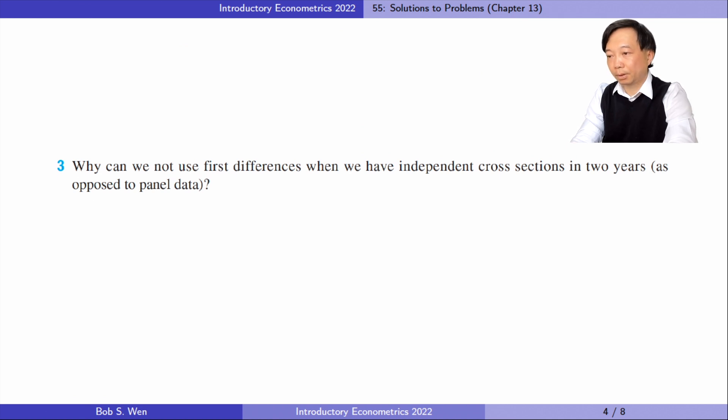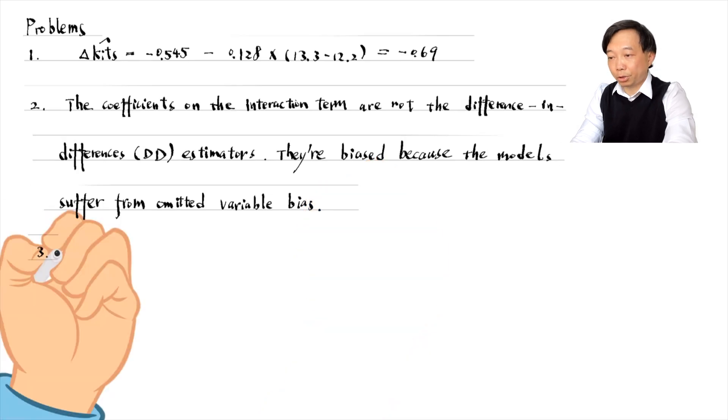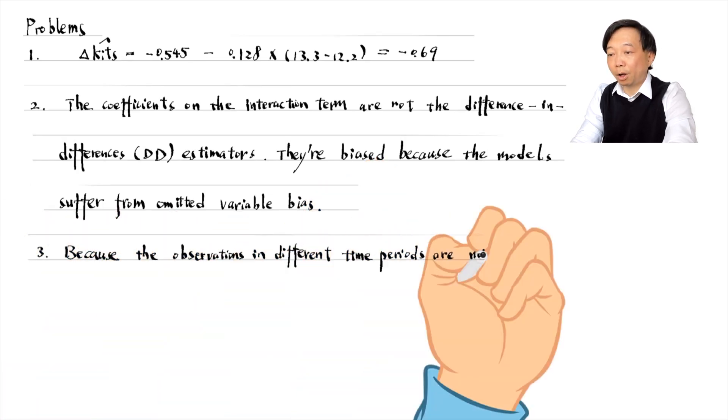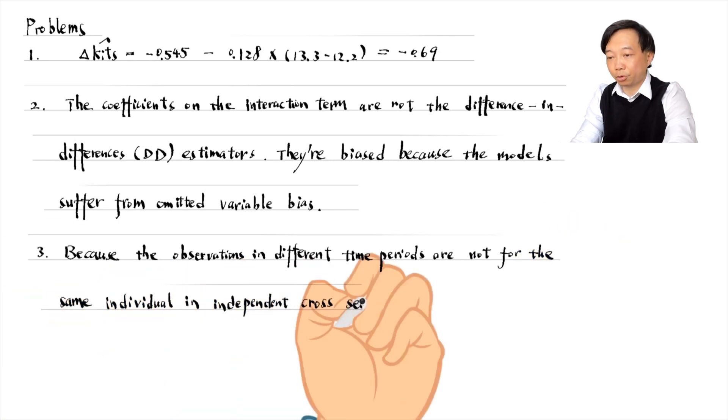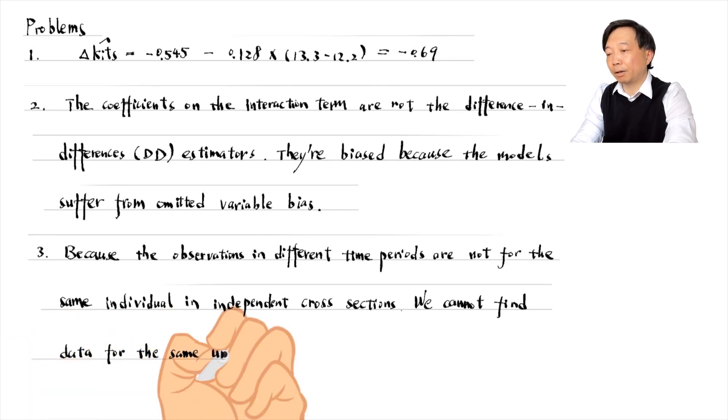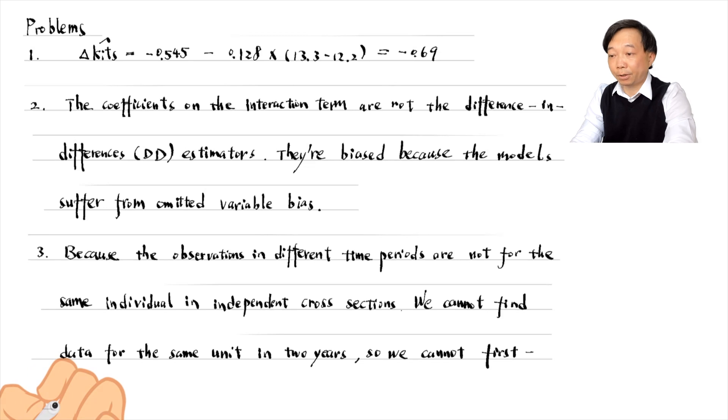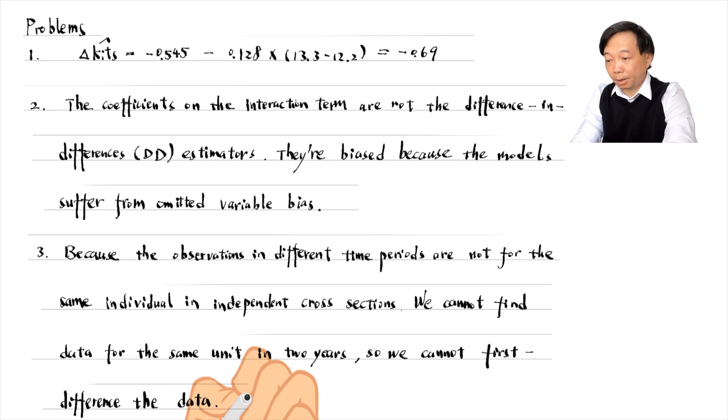Let's solve problem 3. Why can we not use first differences when we have independent cross sections in two years, as opposed to panel data? Because the observations in different time periods are not for the same individual in independent cross sections. We cannot find data for the same unit in two years, so we cannot first difference the data. The main difference between the panel data and the independently pooled cross section is that we follow the same individuals across time to collect panel data, but we don't know whether the individuals in different years are the same in pooled cross sections.